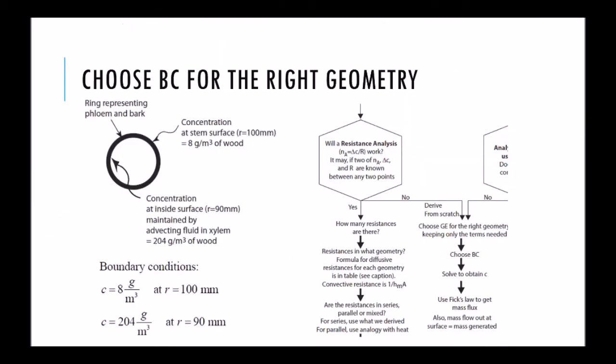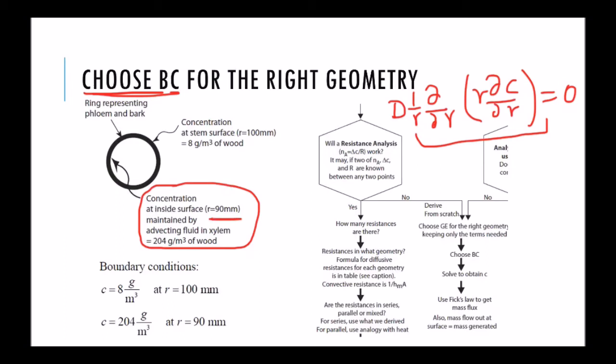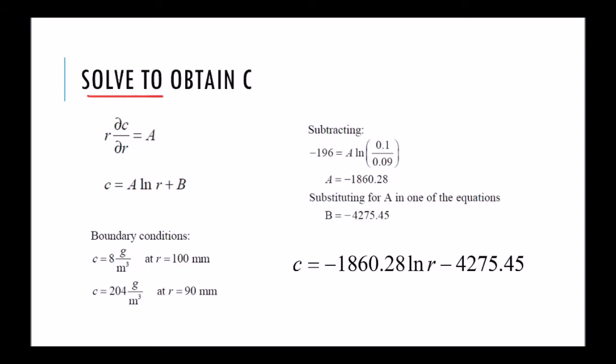Now we have to choose the boundary condition. Let's write that again: 1/R d/dR(R dC/dR) equal to 0. This has a second order term, so if it's a second order equation then you need two boundary conditions. The two boundary conditions given are: at the inside surface, R equal to 90 millimeter, it has this concentration, and the outside surface at R equal to 100 millimeter, it has this concentration. These are my boundary conditions.